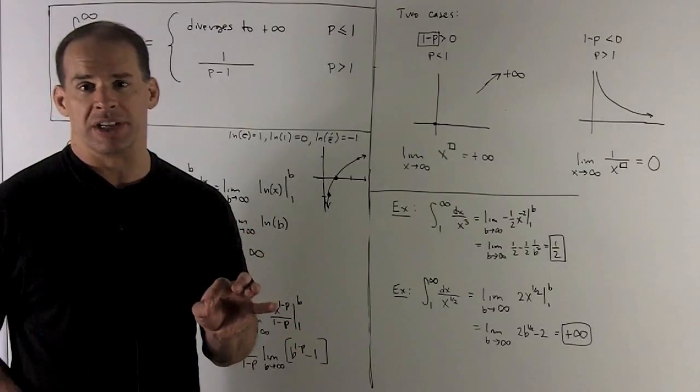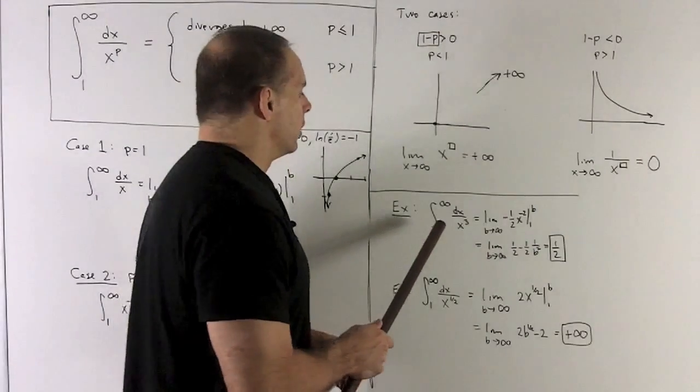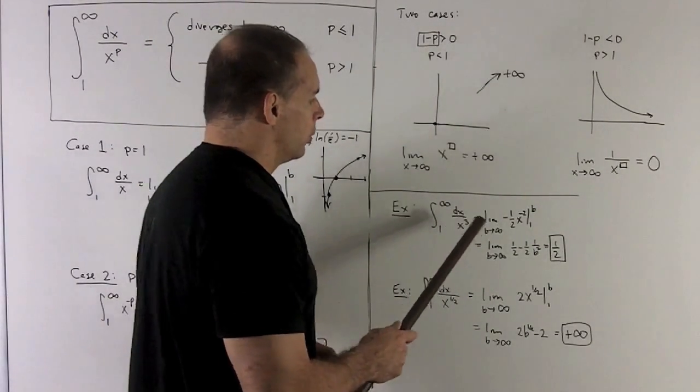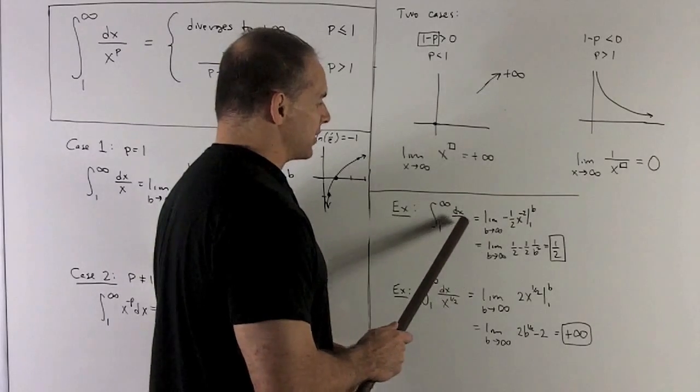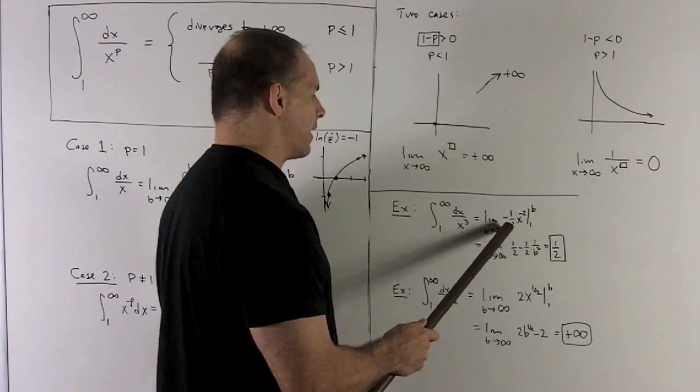Let's just do two concrete examples to drive things home. All right. So if I go 1 to infinity of dx over x cubed, we add 1 and flip it over. This is x to the minus 3, so add 1 gives me minus 2. Flip it over gives me minus 1 half.